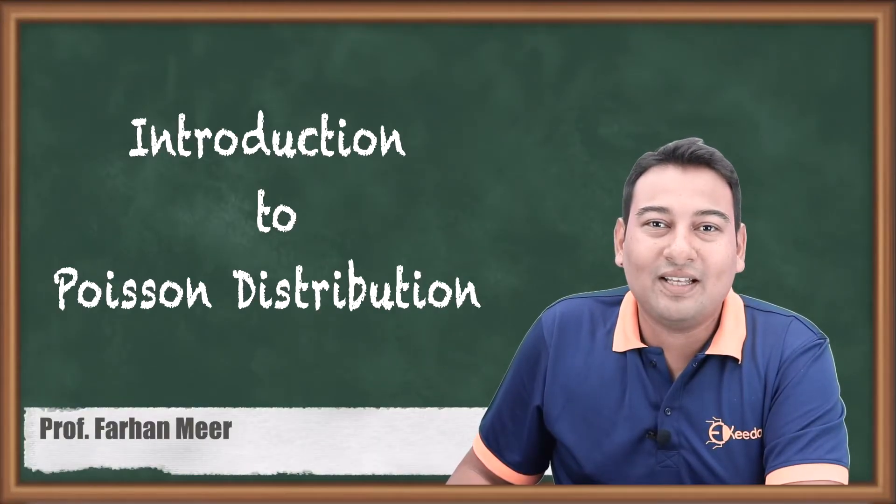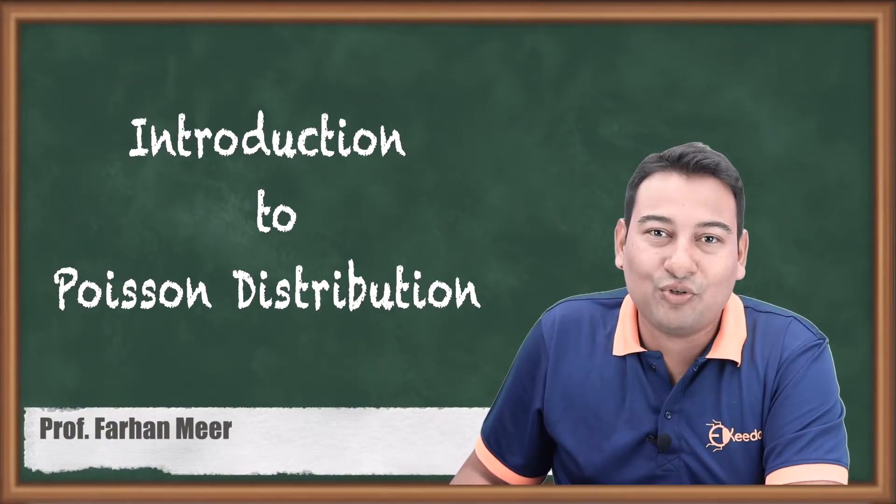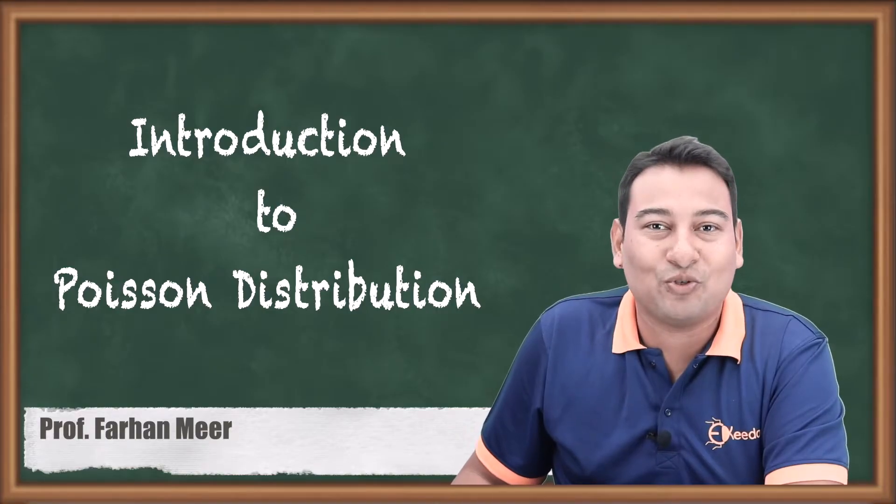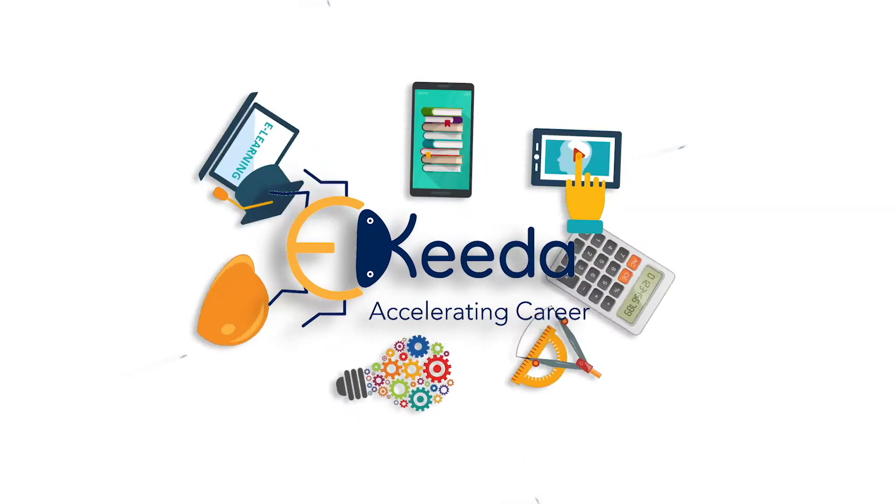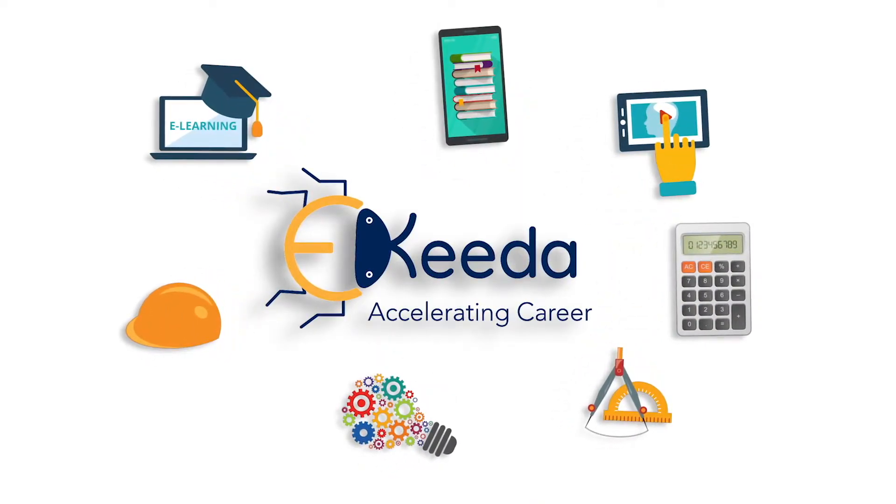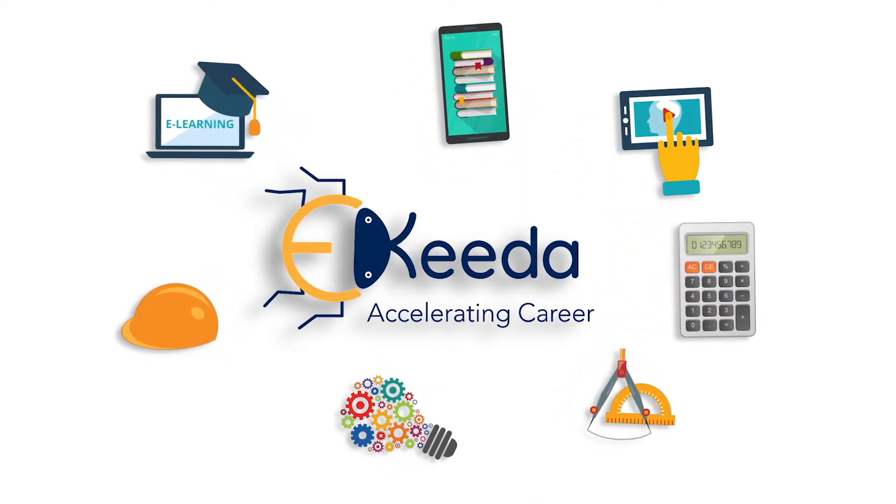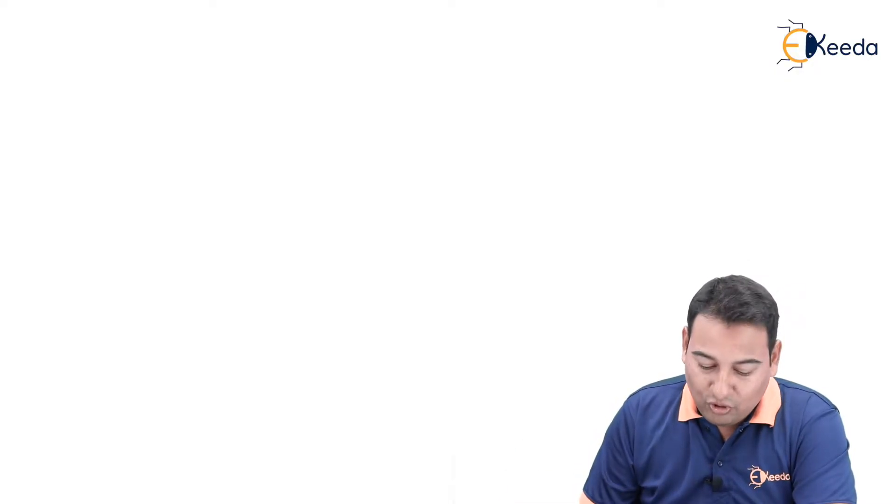Hello friends, in this video we'll discuss the formula for Poisson distribution and when we can use Poisson distribution. Till now we are done with binomial distribution. Now starting with Poisson distribution - Poisson distribution is also a type of discrete distribution.